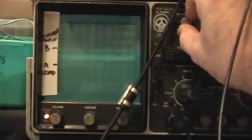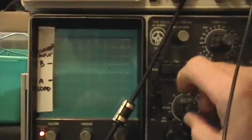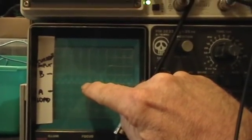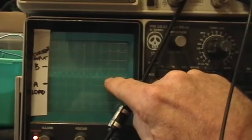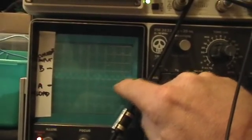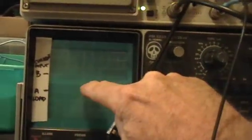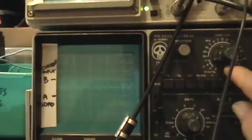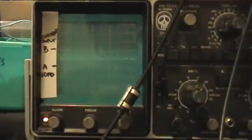I got the intensity all the way up, and I'm just starting to see there. So I have one, two, three, four, five, six, seven. I have seven complete cycles in five major divisions at two tenths of a microsecond per division.